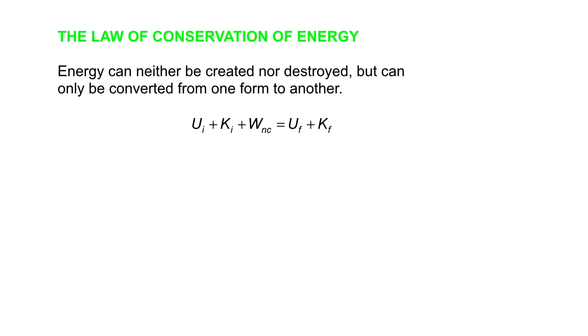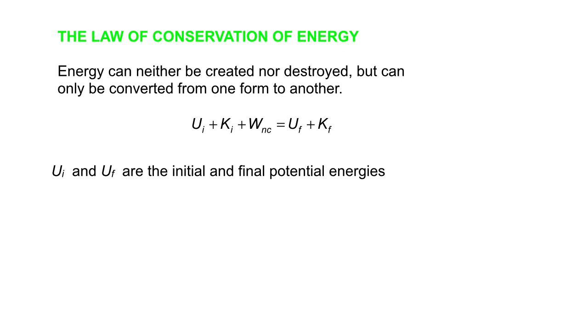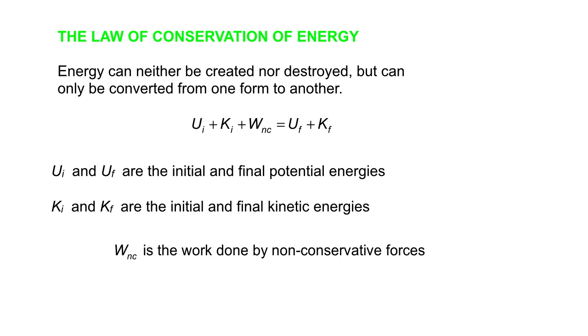We write an equation that looks like this. The U's are the potential energies. Ui is the initial potential energy, Uf is the final potential energy. The K's are kinetic energies. And Wnc is the work done by non-conservative forces. So the sum of the initial potential plus the initial kinetic plus work done by non-conservative forces is the final potential plus the final kinetic. That's how we write out the law of conservation of energy, and we can apply that in many situations. Don't forget that Wnc can be negative or positive or zero, and you go back to the definition of the work equation to get the sign.